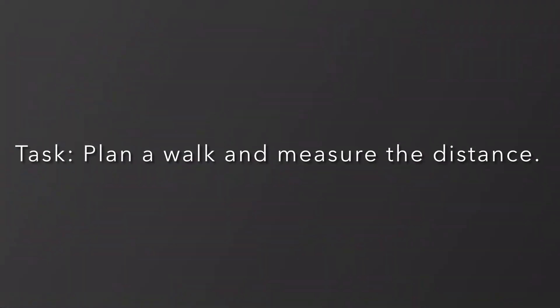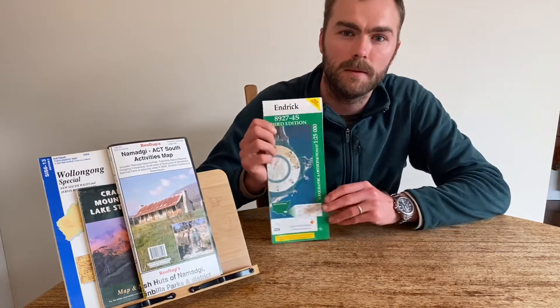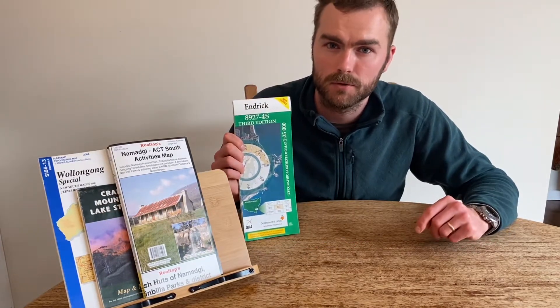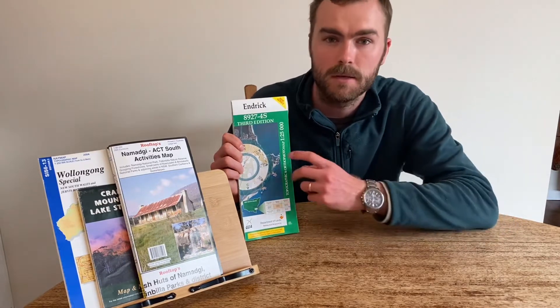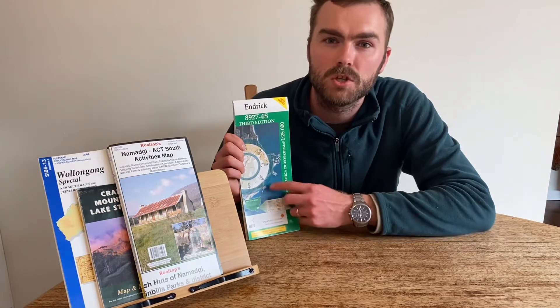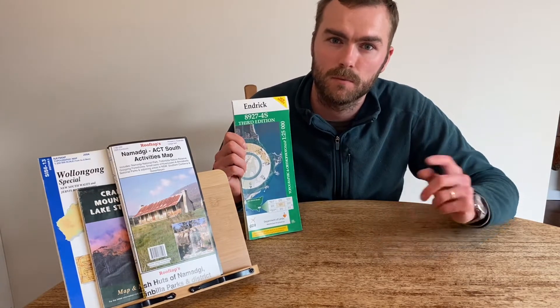Your task for video two is to use your one to 25,000 map found in week one's video — a nature reserve near you — and map out a walk you can complete, then measure the distance using the techniques we've just covered. Thanks for watching Outdoors and Nat. Check out the next video on contours and land features in this wilderness navigation series, and have a great and safe outdoor adventure.